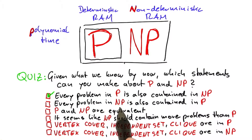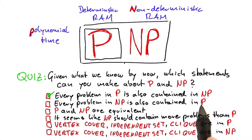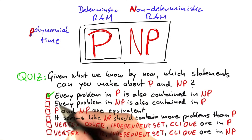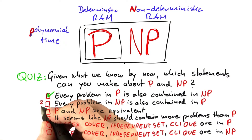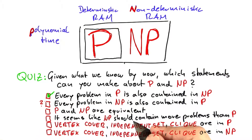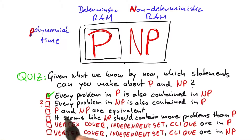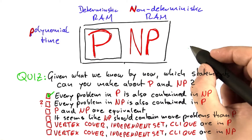If every problem in NP were also contained in P, that would mean that we have a polynomial time algorithm for vertex cover, independent set, and clique. We do not know that to be true yet. We also don't know it to be false, but it's not something we can make a statement about. And since we can't make a statement about this, we can also not say that P and NP are equivalent or basically the same.